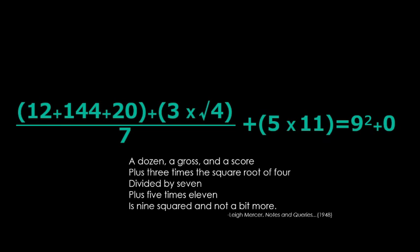A dozen, a gross, and a score, plus three times the square root of four, divided by seven, plus five times eleven, is nine squared and not a bit more. Now, this is undeniably brilliant, and I think that the only reason it didn't receive international attention is because it only really works in English. Not just because of the rhythm and the rhyme, but the fact that most languages have no idea what a dozen or a gross are.